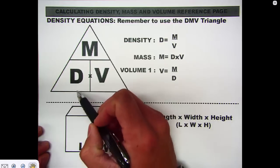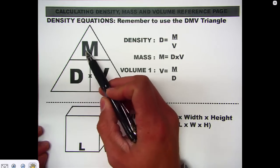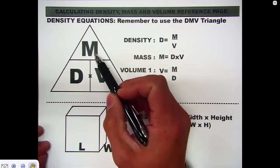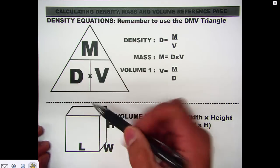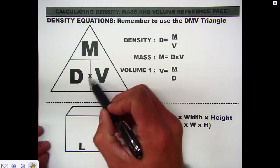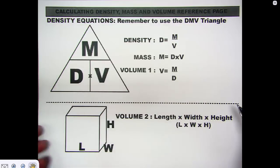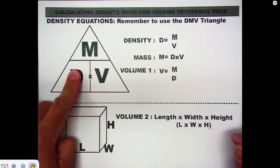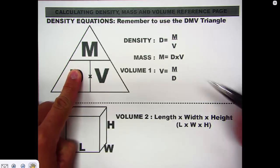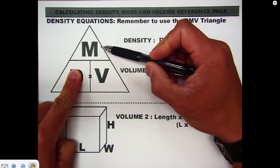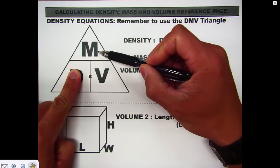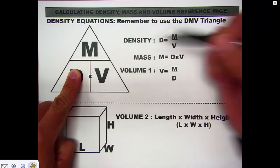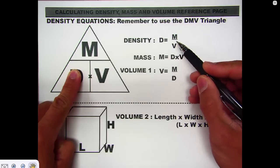When you set up the triangle, just make sure you put the mass at the top — put M at the top. It doesn't matter if you put D or V at the bottom, but put mass at the top. Then at the bottom, put a multiplication sign like an X between the two bottom letters. When asked to calculate density, cover up the value you're solving for, and what you're left with is the equation. So you have mass over volume — density is mass divided by volume.